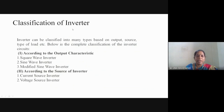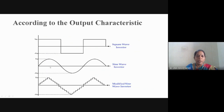Depending upon the output characteristics, inverters are classified as square wave inverters, sine wave inverters, and modified sine wave inverters. The waveform of a square wave inverter is a square wave, the sine wave inverter produces a sine wave, and the modified sine wave inverter produces a stepped wave.